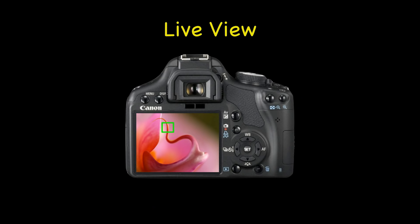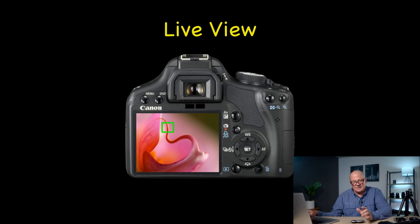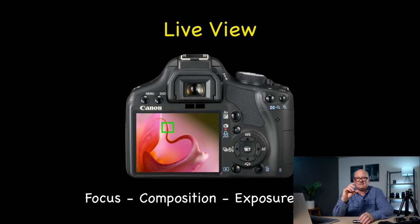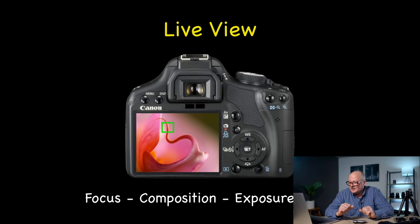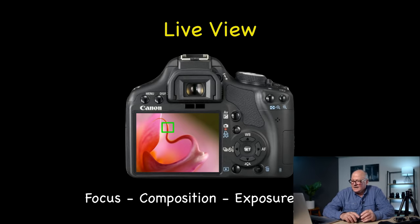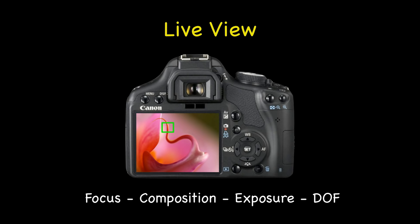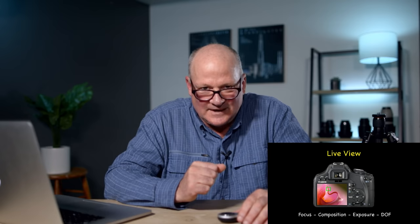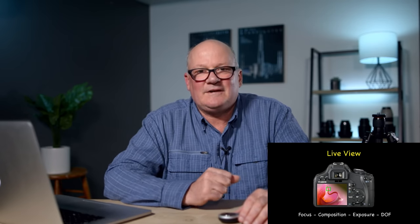Live view — what a wonderful thing. Not only does it help with mirror lockup, but it also helps with focus because you can zoom in to different parts of the image to get your focus really precise. It helps with composition because you can see without having to look through the eyepiece — a lot of times your camera is in a place where it's really difficult to get down to the viewfinder. Also, it helps with exposure because you have the histogram, it can help with depth of field so you can see what kind of depth of field you're getting using a certain aperture. So many great things about live view.